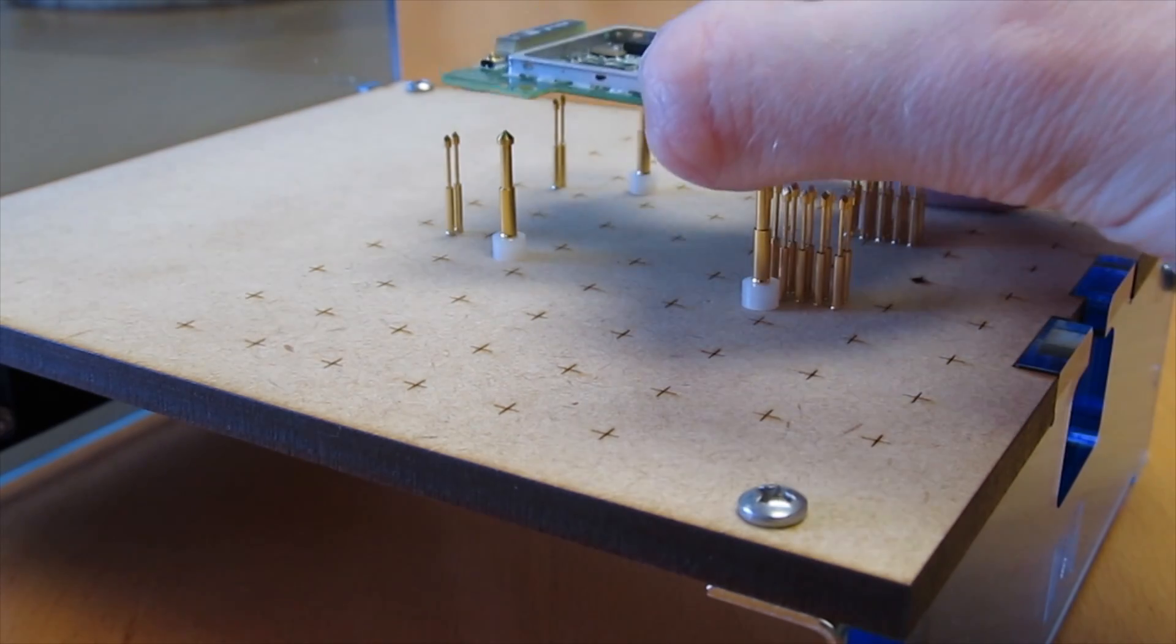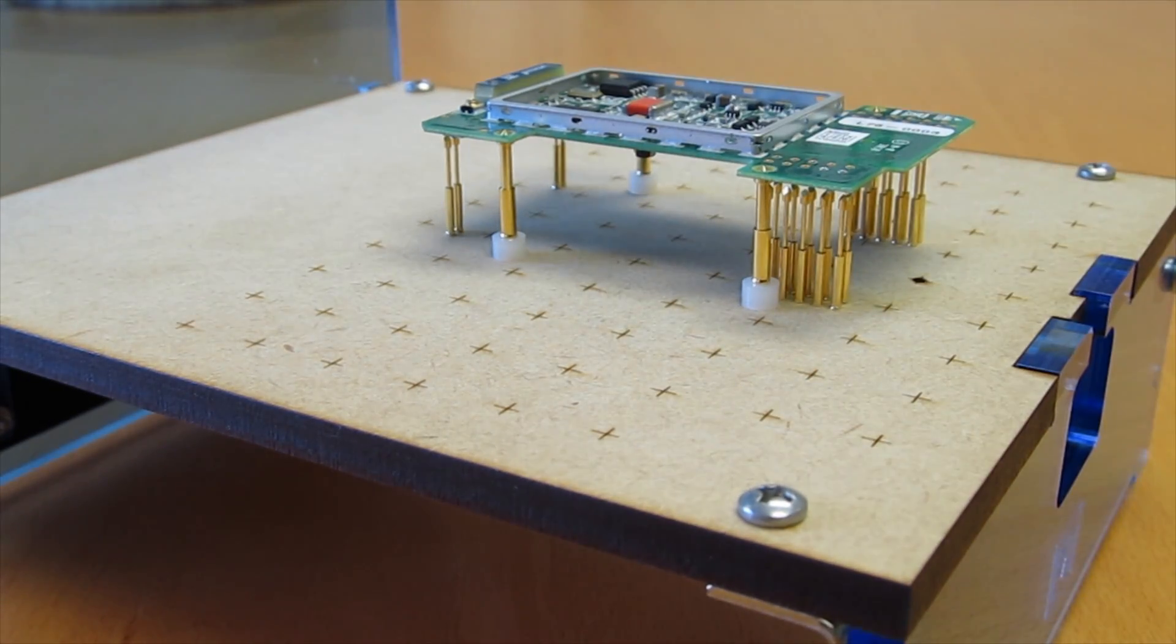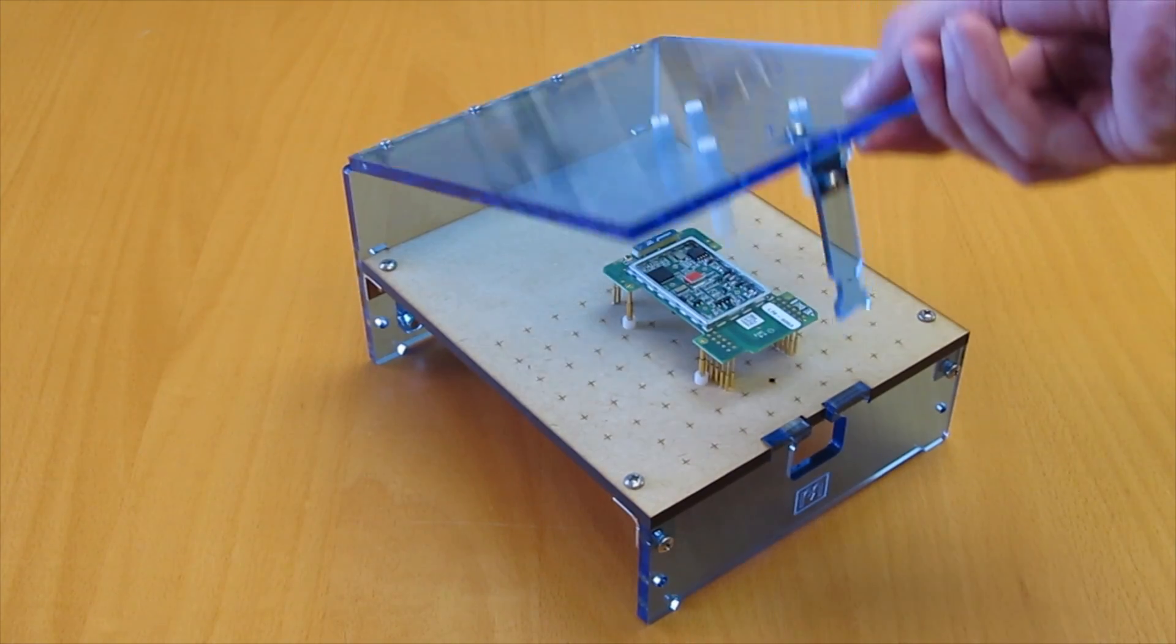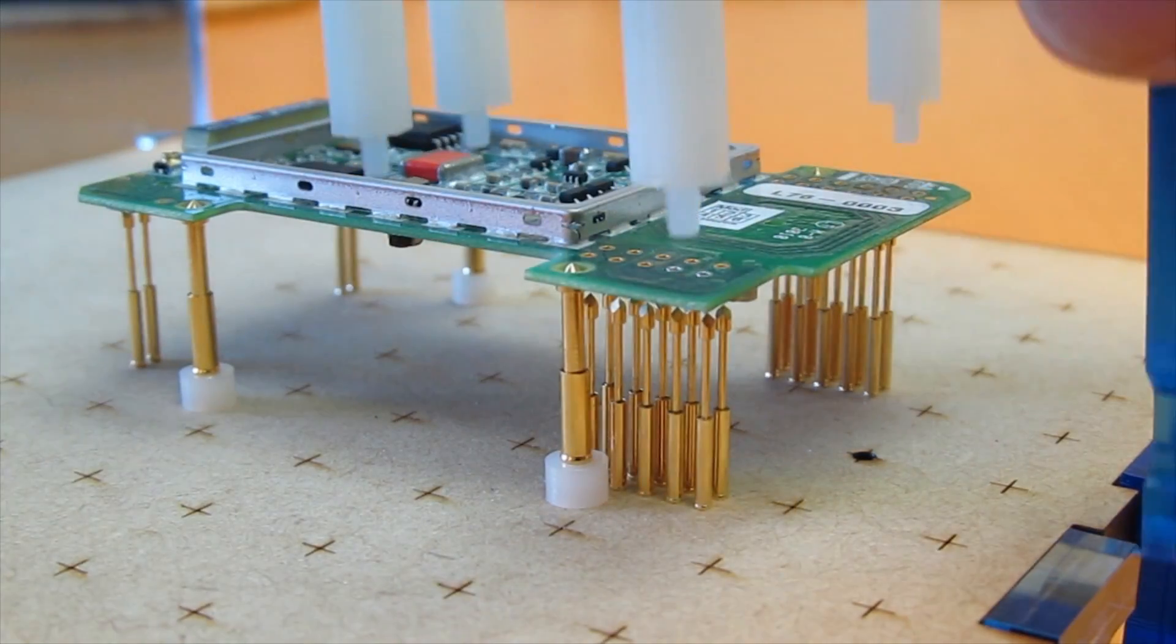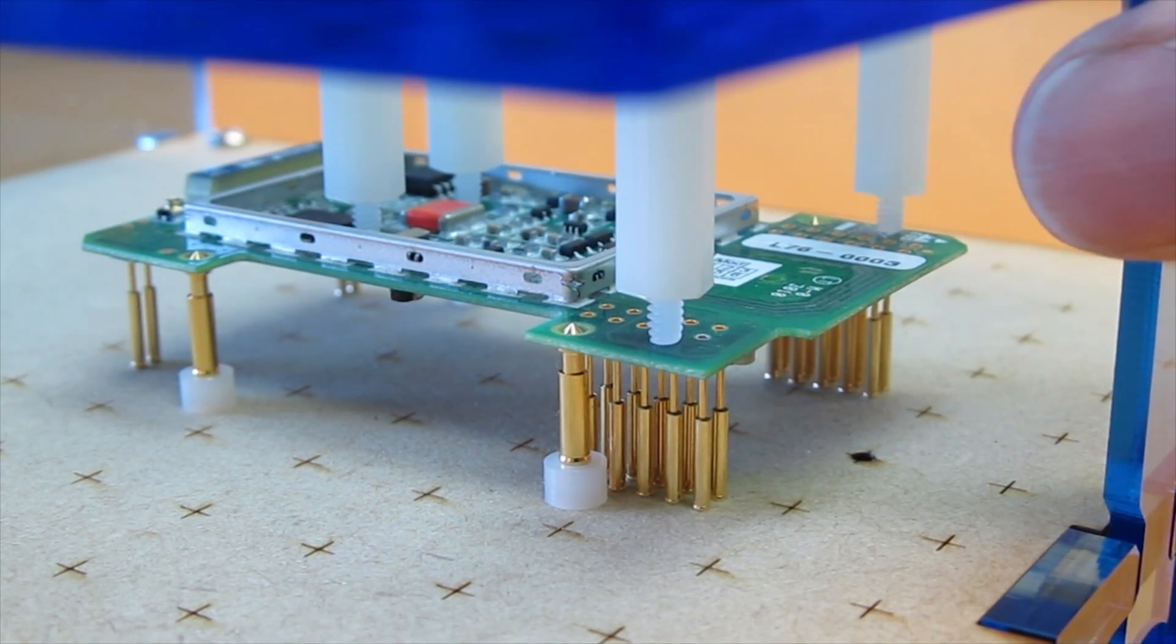The board is placed on the locating probes which align the board using its tooling holes. As the fixture is closed the hold down posts press on the board from above. The locating probes compress and the board is lowered onto the test probes making electrical contact.